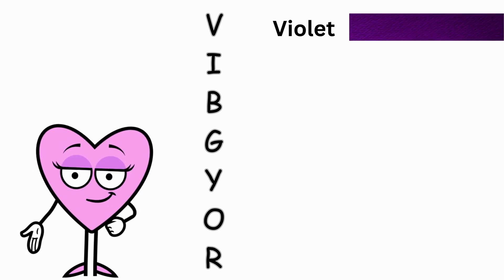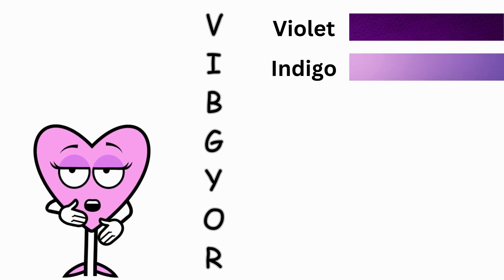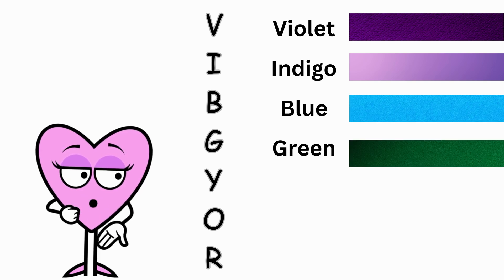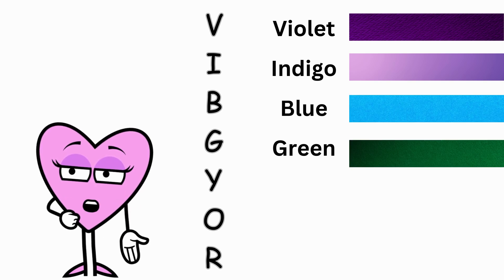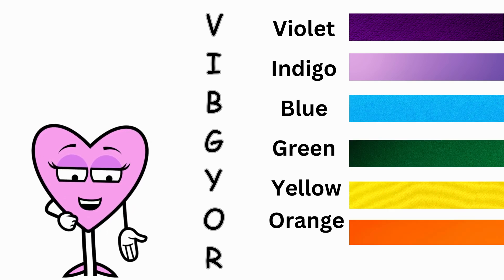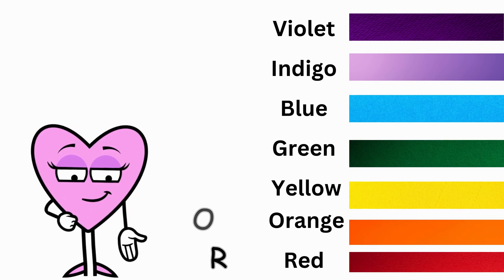Rainbow is also named as VIBGYOR, where V stands for violet, I for indigo, B for blue, G for green, Y for yellow, O for orange, and R for red.